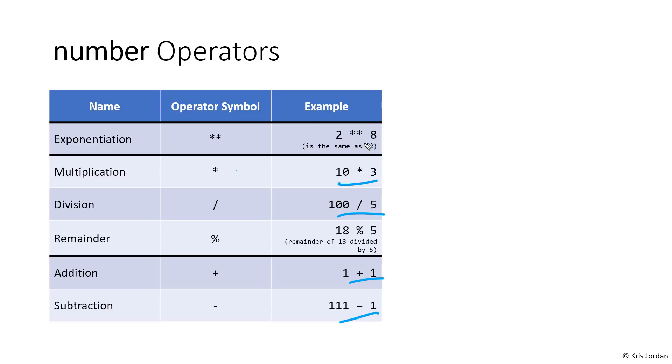There are a few operators we should talk about specifically. The first is exponentiation. This one looks a little funky. If you want to raise 2 to the power of 8, you can't write it like this with a superscript in our programming language. You'll write it as 2 followed by a double asterisk 8. This is the exponentiation operator, and even though it's two symbols, it's still one single operation.